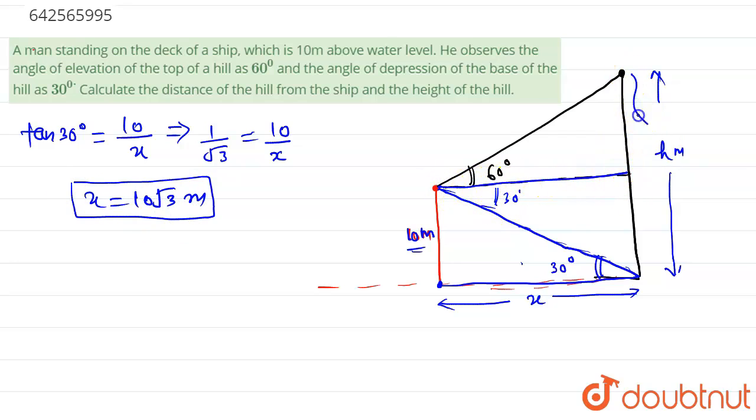Now in this triangle, the total length is h and this length is 10, so it becomes h minus 10. So applying tan 60 degrees in this triangle, we will have tan 60 degrees is equal to